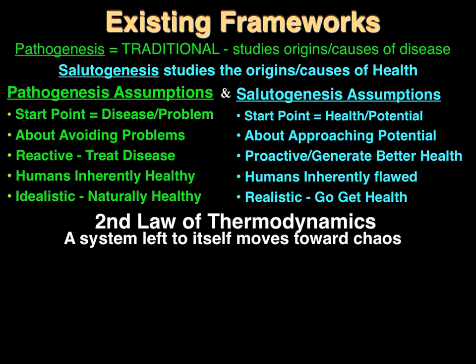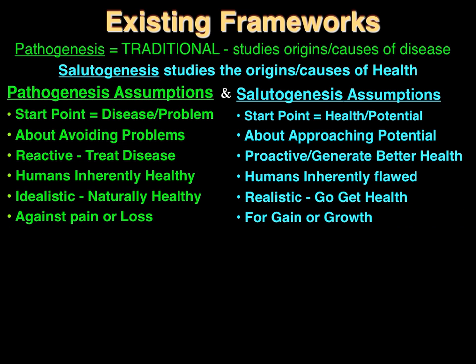In Tal Ben-Shahar's book, Happier, he points out that happiness takes work. We have to do something to create happiness — if you want unhappiness, just do nothing, and it's almost assured to happen. So if we want health, we must make it happen; we must cause health to happen. Pathogenesis is just against pain, loss, and not having a problem, whereas salutogenesis is about creating a gain and creating growth so we become who it is we want to be.